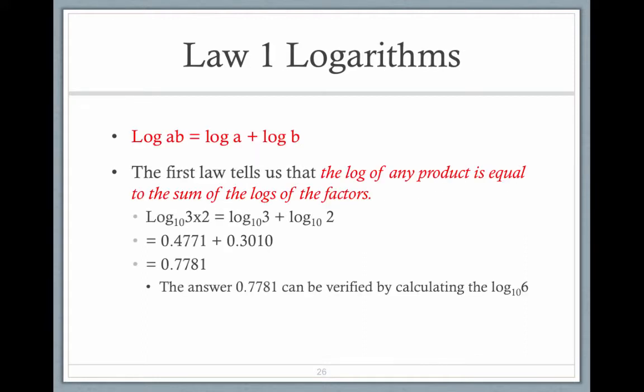Log AB is the same as saying log A plus log B. So log base 10 of 3 times 2 is log base 10 to the third plus log base 10 squared. And then you add them.